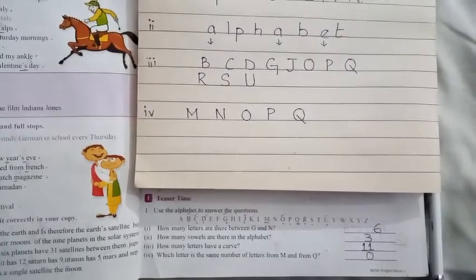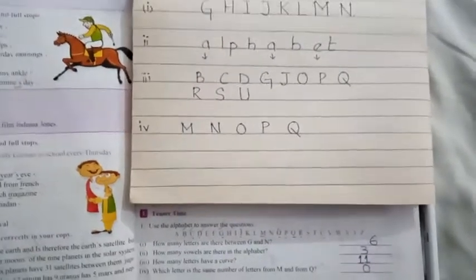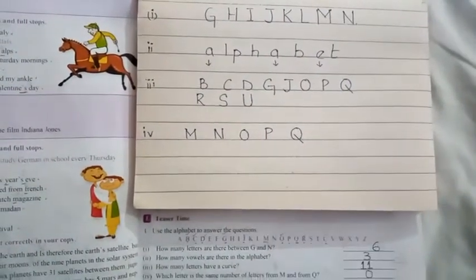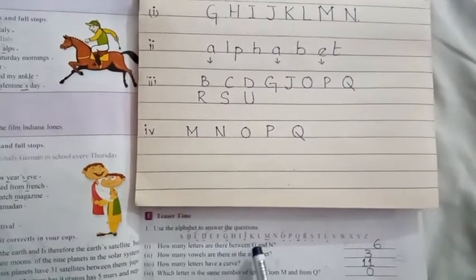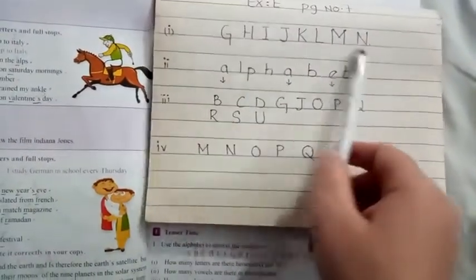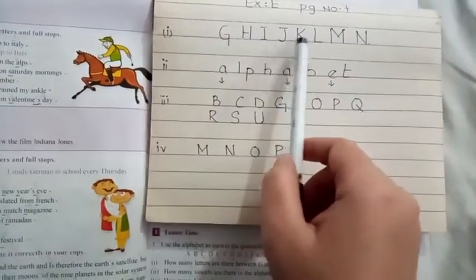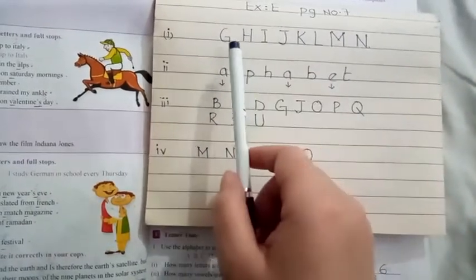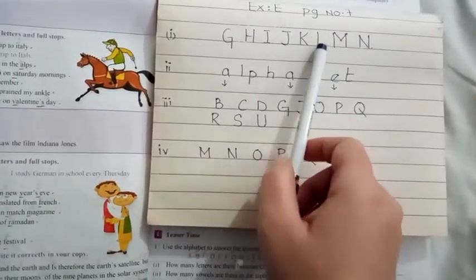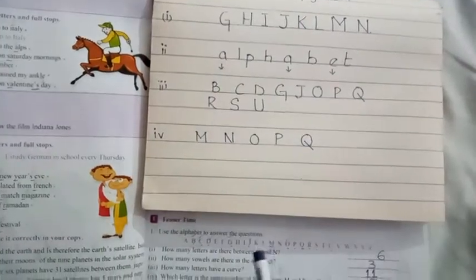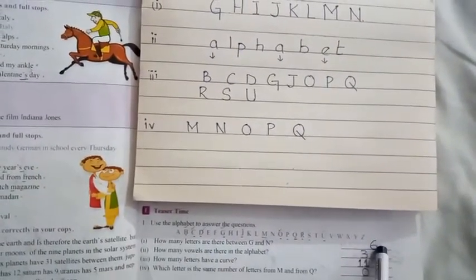How many letters are there between G and N? So the first one I have done for you. They are asking how many letters are there between G and N. So I have written from G to N: H I J K L M and N. So between G to N you have one, two, three, four, five, six. Six alphabets. So your first answer will be six.